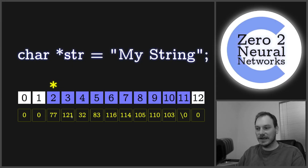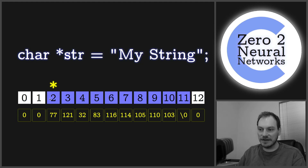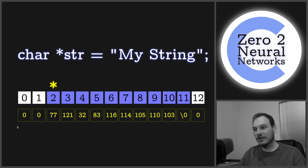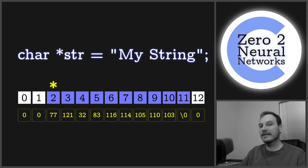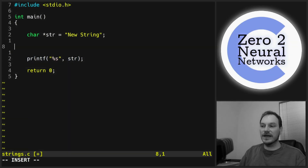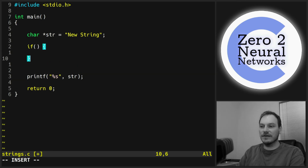We can't write to that block of memory because it's part of the read-only memory section of our program. Trying to write to it causes a segfault because we're not allowed to write to that part of memory. So that covers the two different types of string.